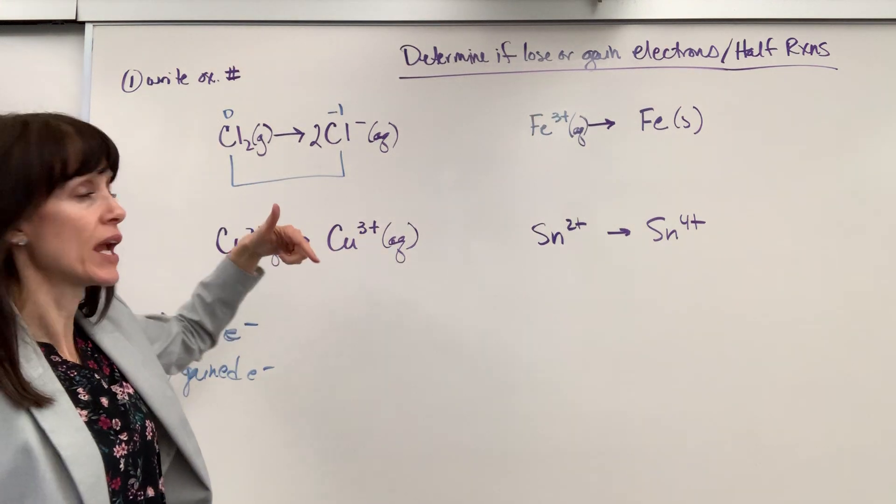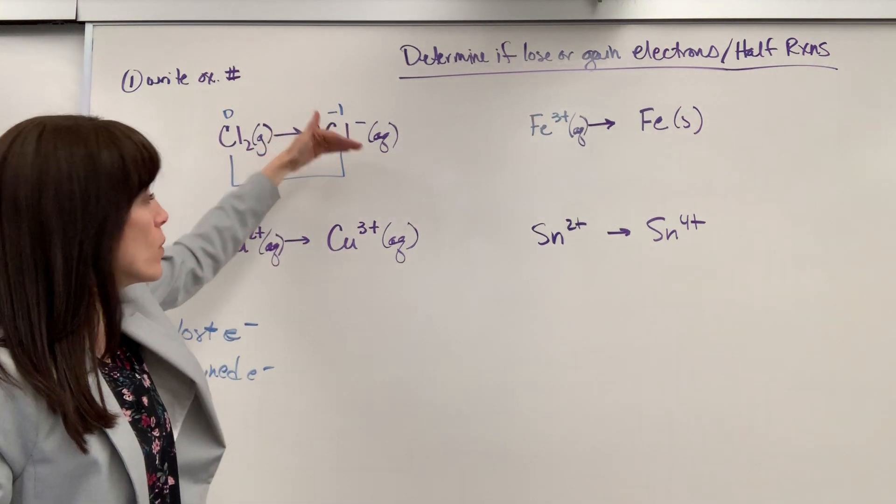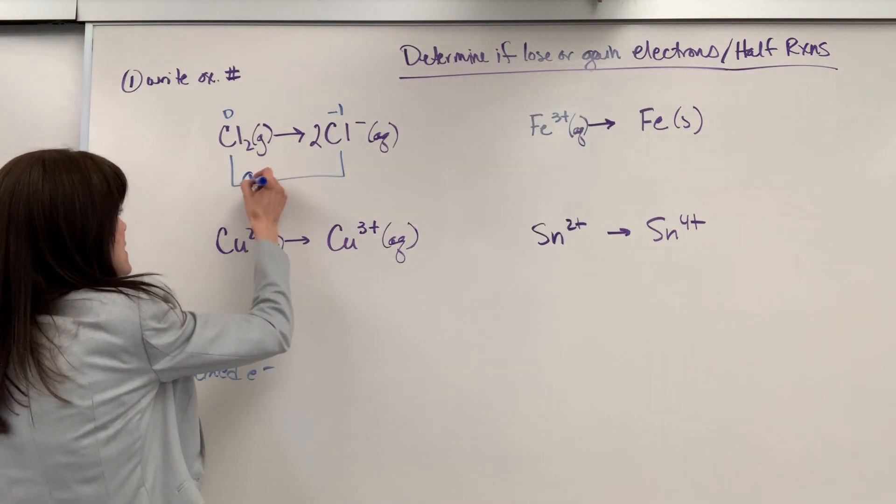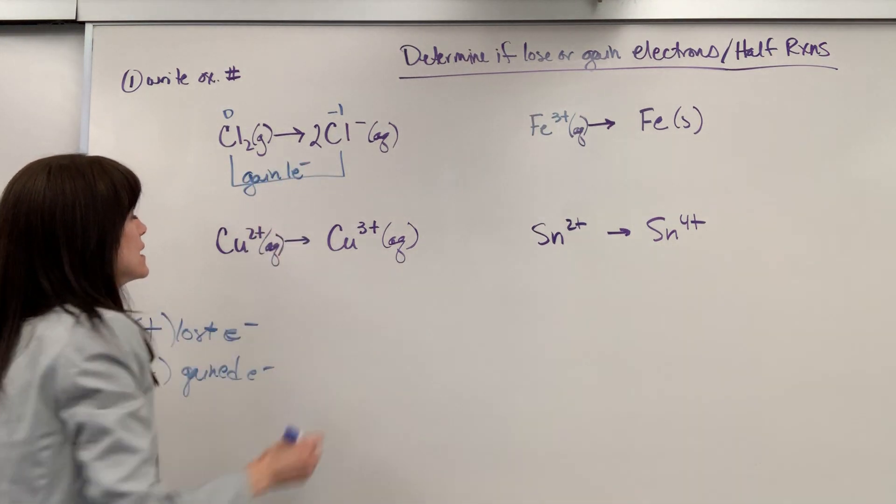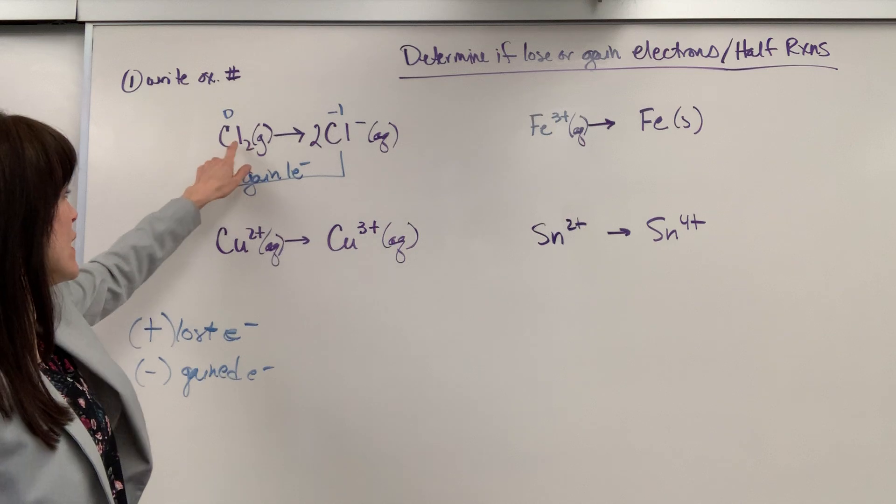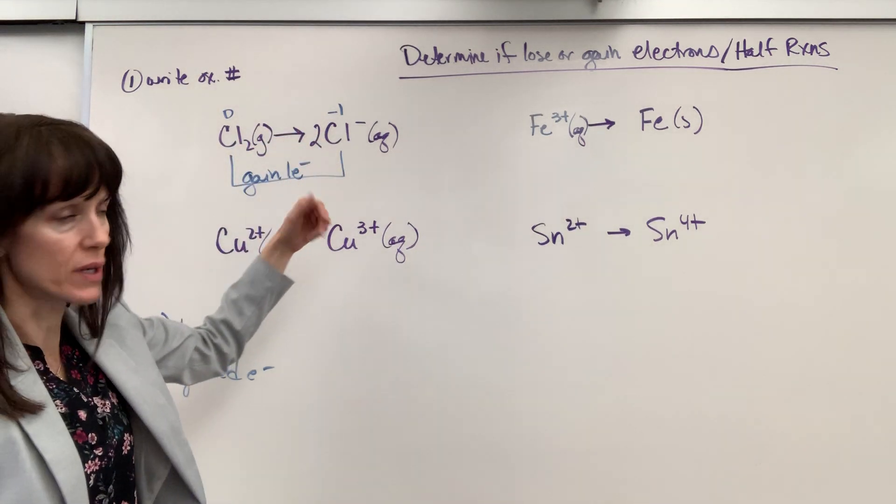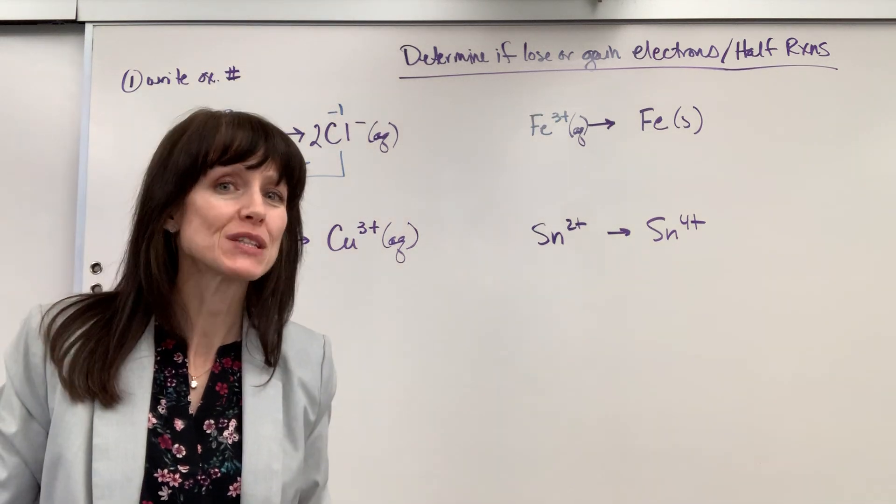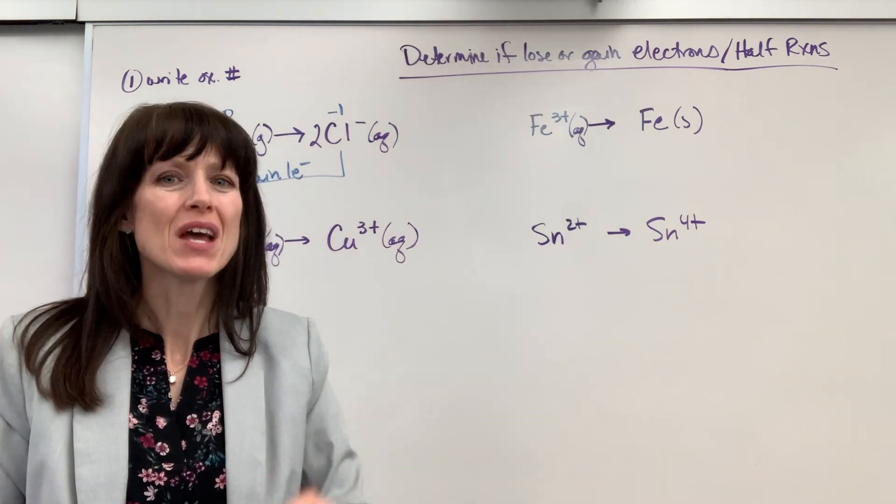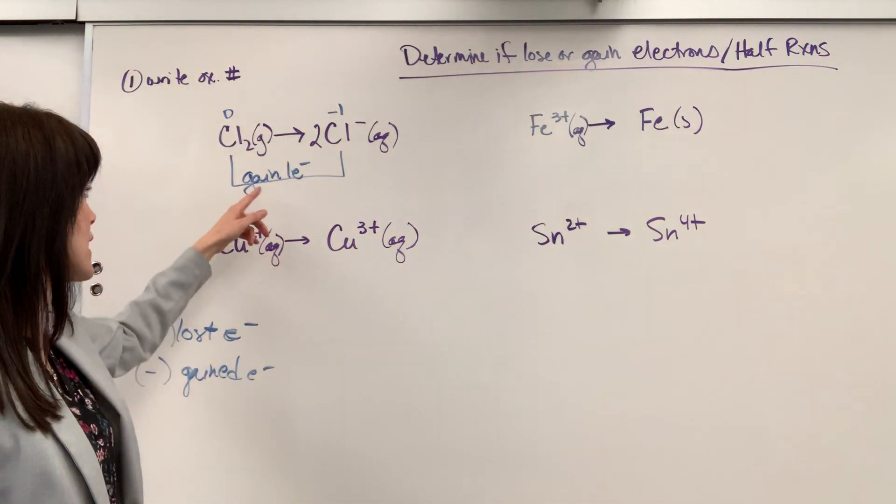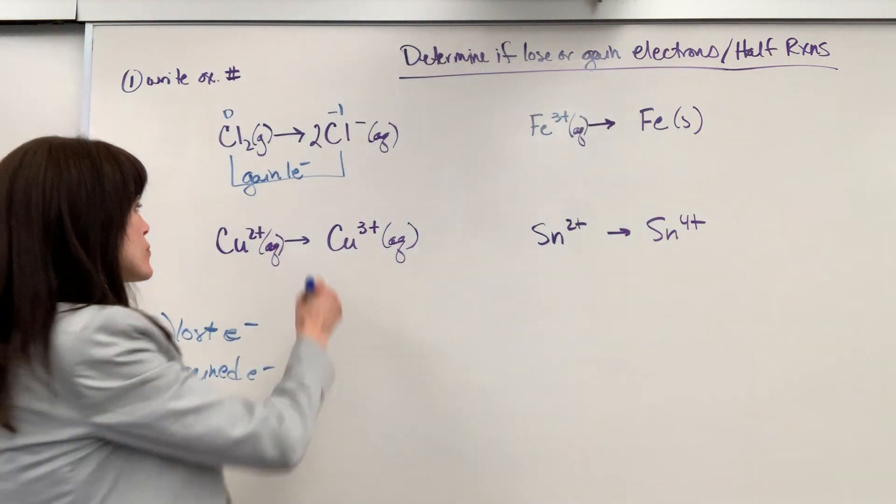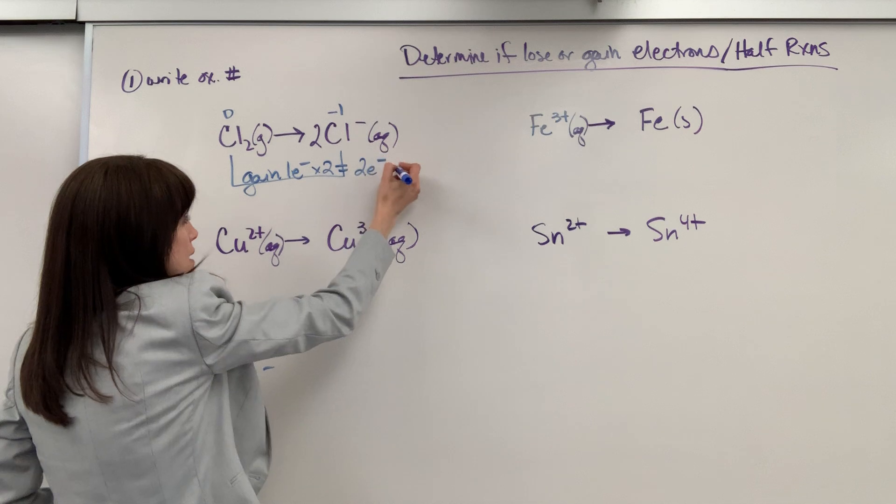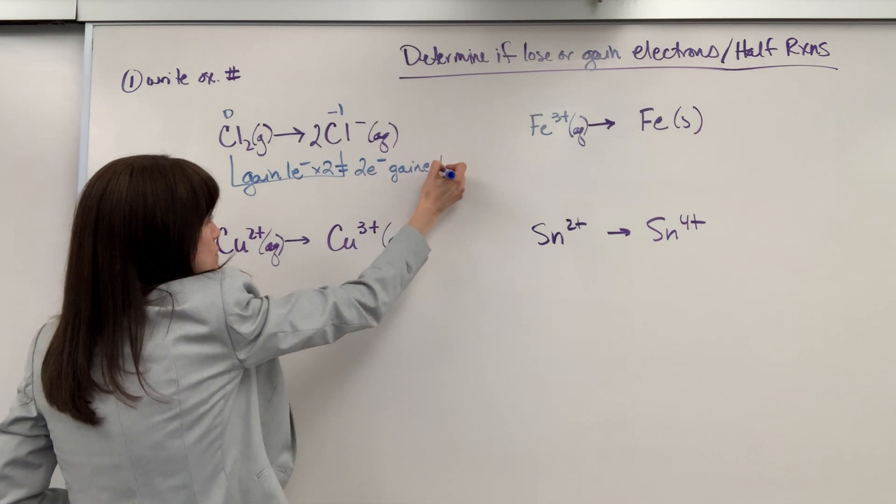Well, you always look at the change. Going from zero to up by one, what happened? We gained an electron. So this gained one electron. Okay, now I have two chlorines, two chlorines, of course. One chlorine gained one electron. We always write oxidation numbers for one atom. So one chlorine gained one electron, but I've got two chlorines. So I multiply that by my two atoms, which is going to give me a total of two electrons gained.